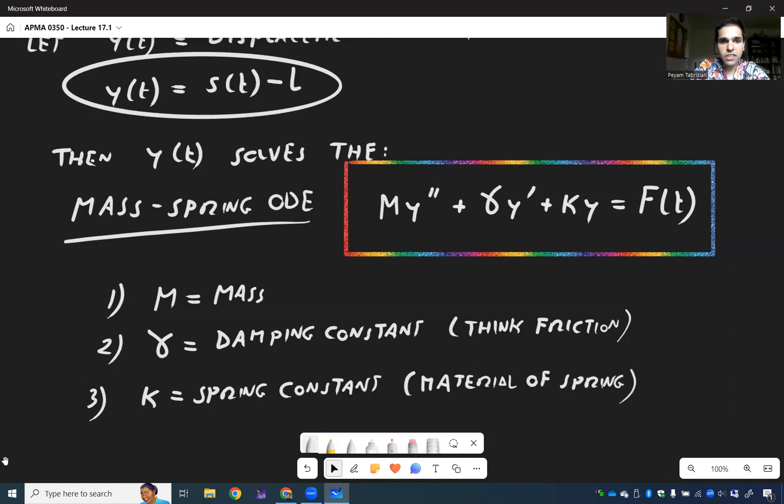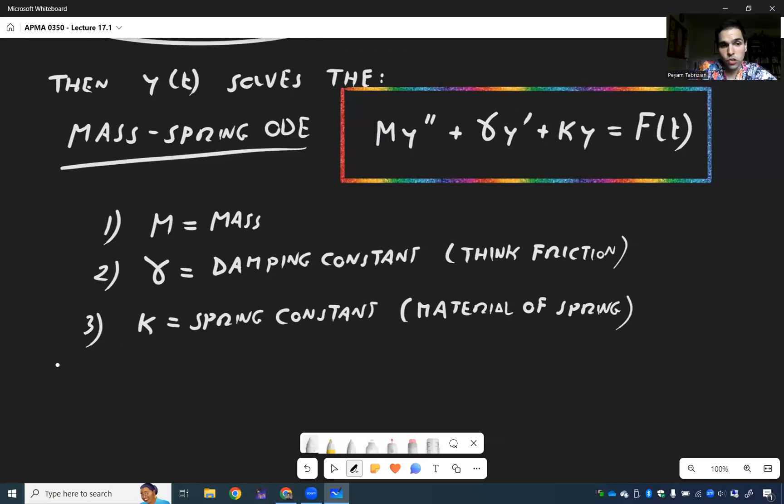And last but not least, F is what's called a forcing term. Imagine you're swinging on a swing and you move your feet to accelerate your motion a little bit. That's what's called a forcing term.